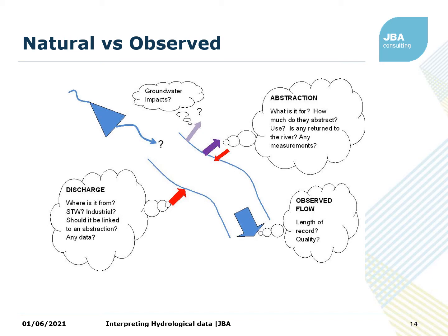Then you have discharges — water coming into the river, perhaps from sewage treatment works or an industrial premises. Sometimes it can be linked to an abstraction: for example, a factory abstracting water, using some and putting the rest back as wastewater. You've also got reservoirs, where you're trapping flow in drier periods when reservoir levels are low, making some sort of steady or seasonal release. And then groundwater impacts — groundwater could be contributing to or losing water from river flow. All of this adds up to give your observed flow, and understanding how these things interact is essential when working out what your environmental flow should look like.